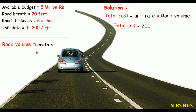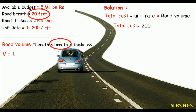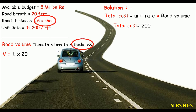The road volume equals length times breadth times thickness. The length is unknown, so I'll represent it with L. Breadth is 20 feet, thickness is six inches or 0.5 feet. So the volume equals 10 times L, the length of the road.